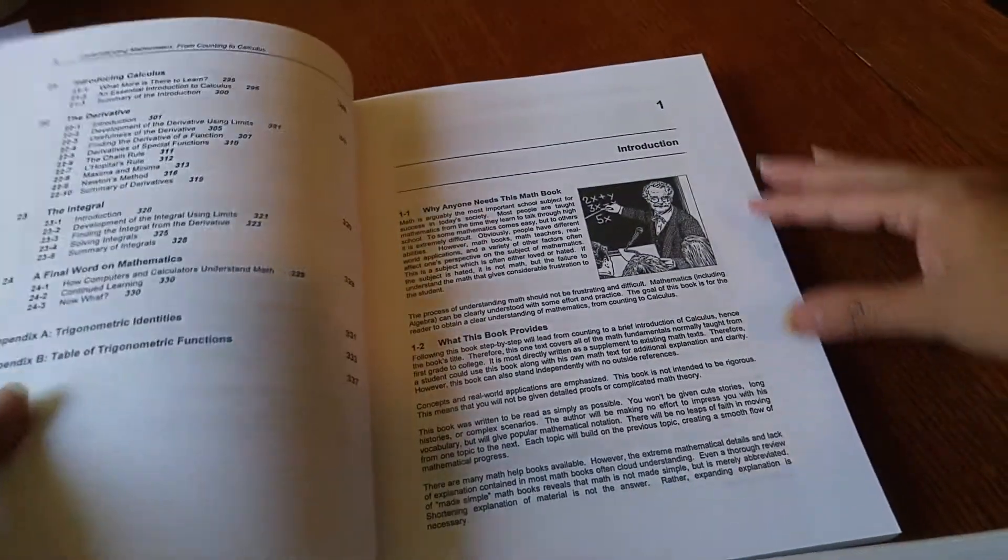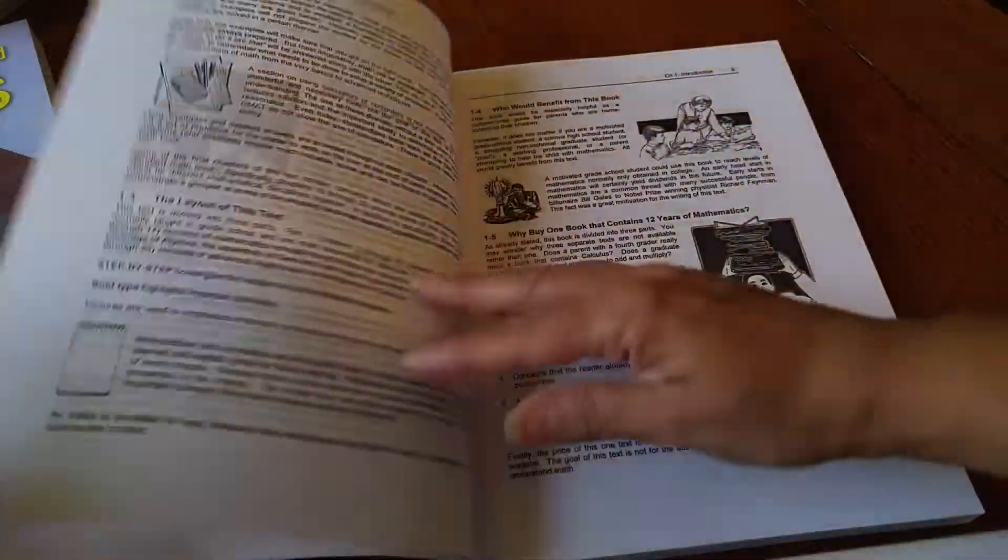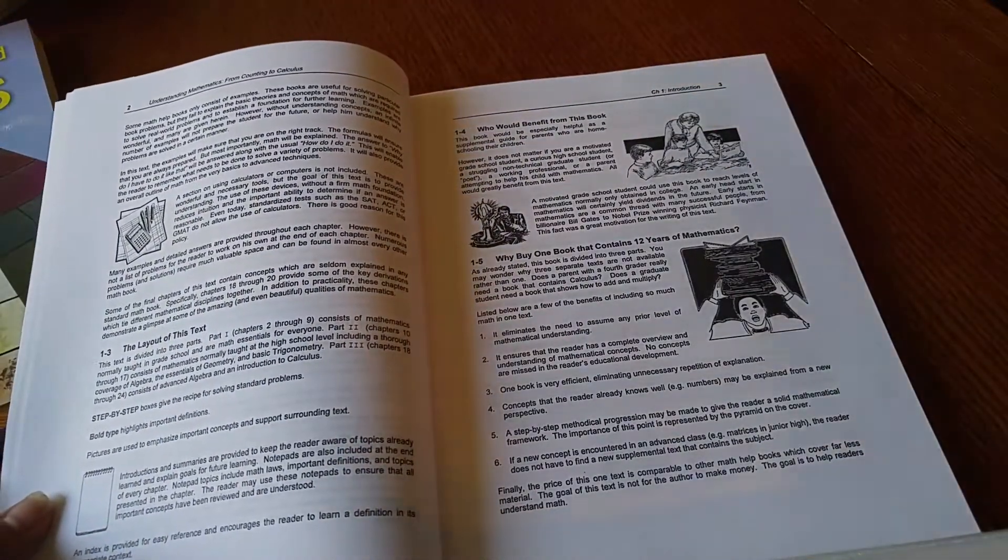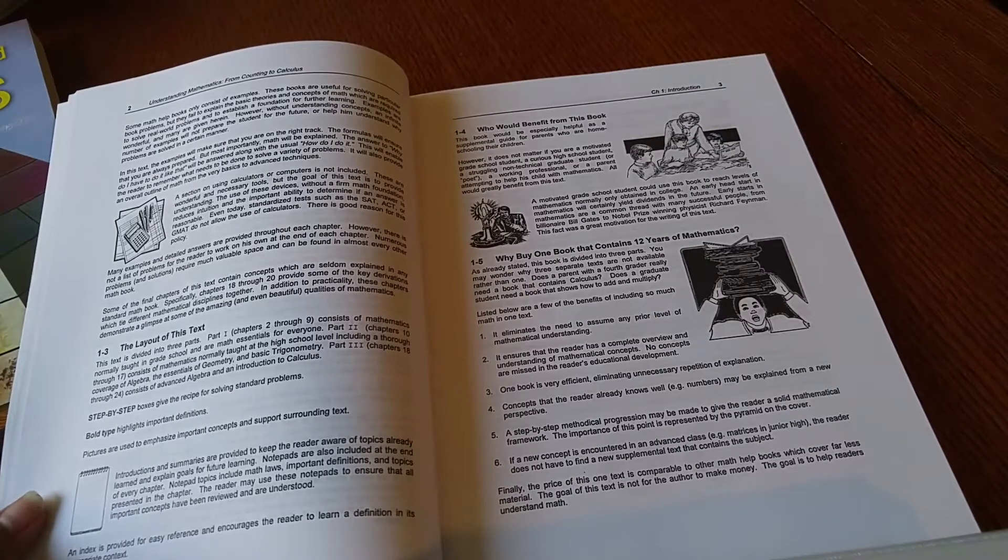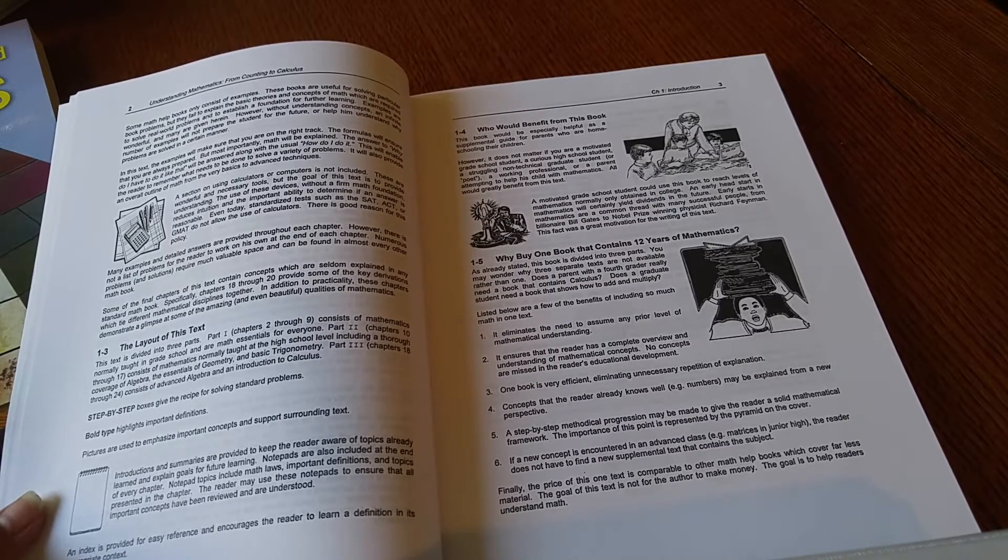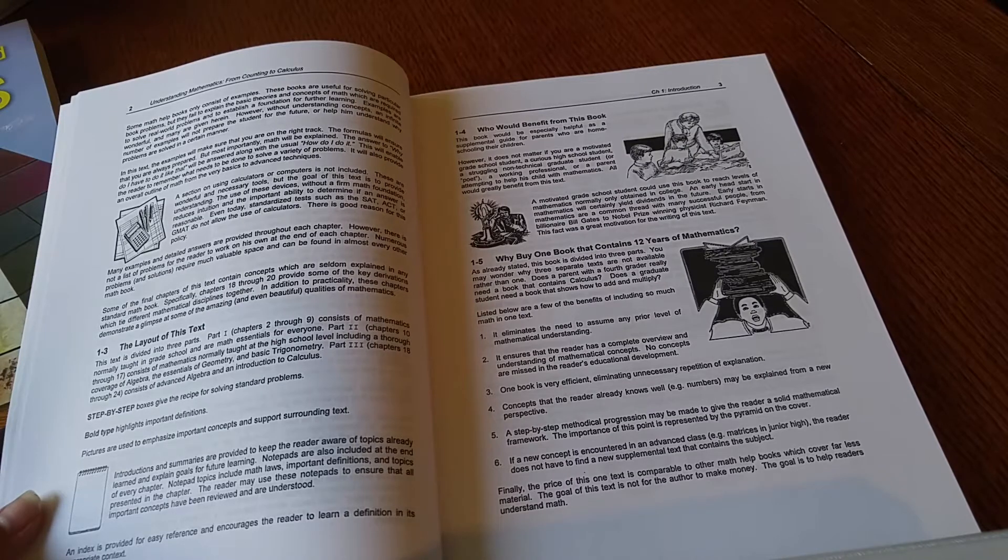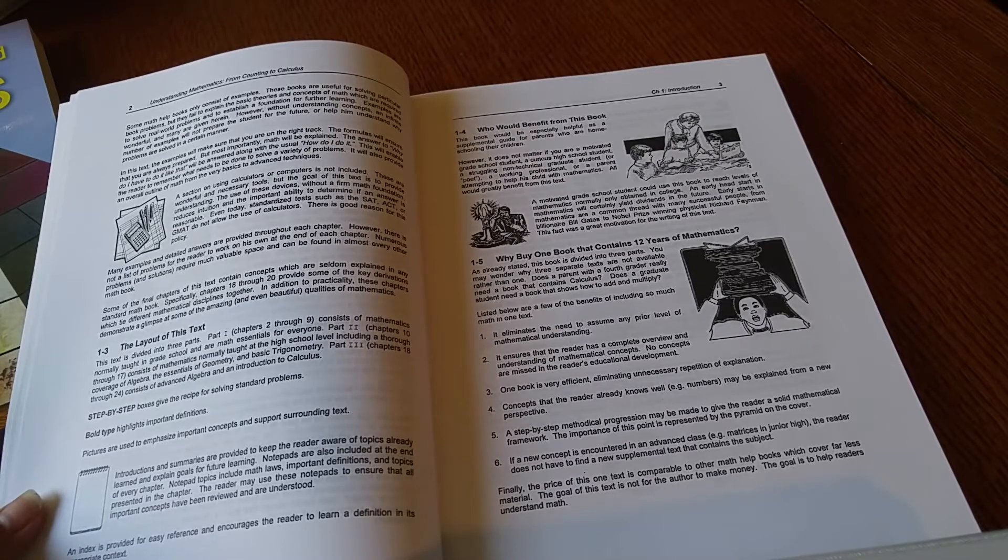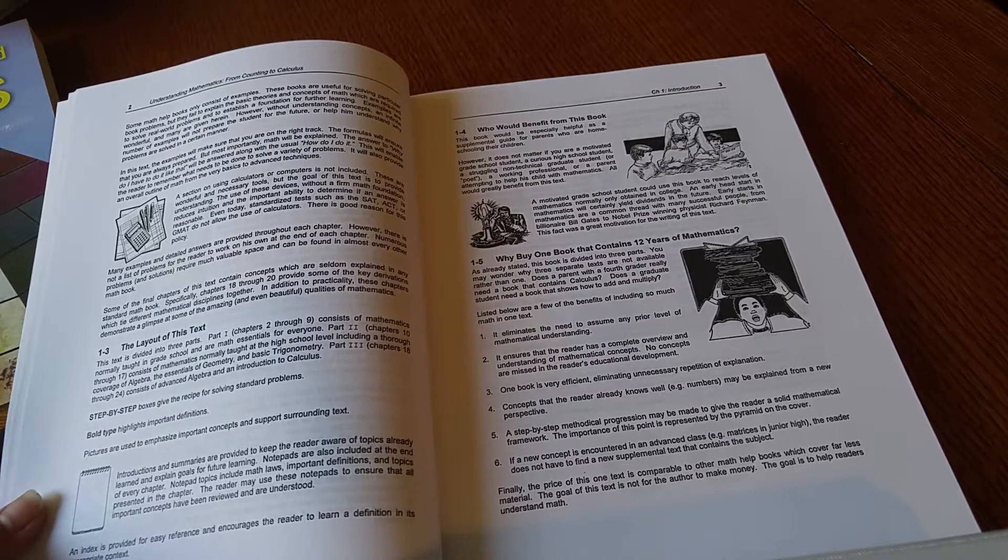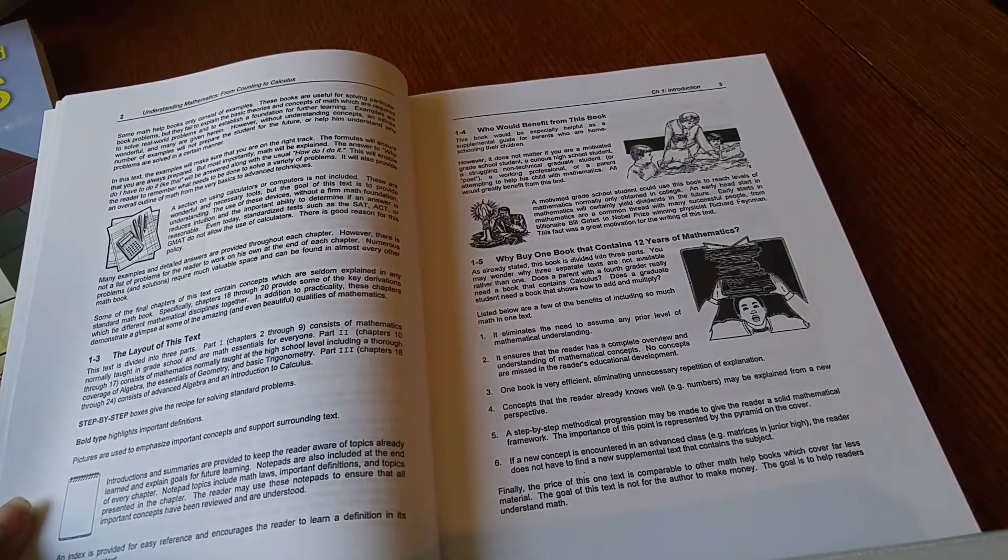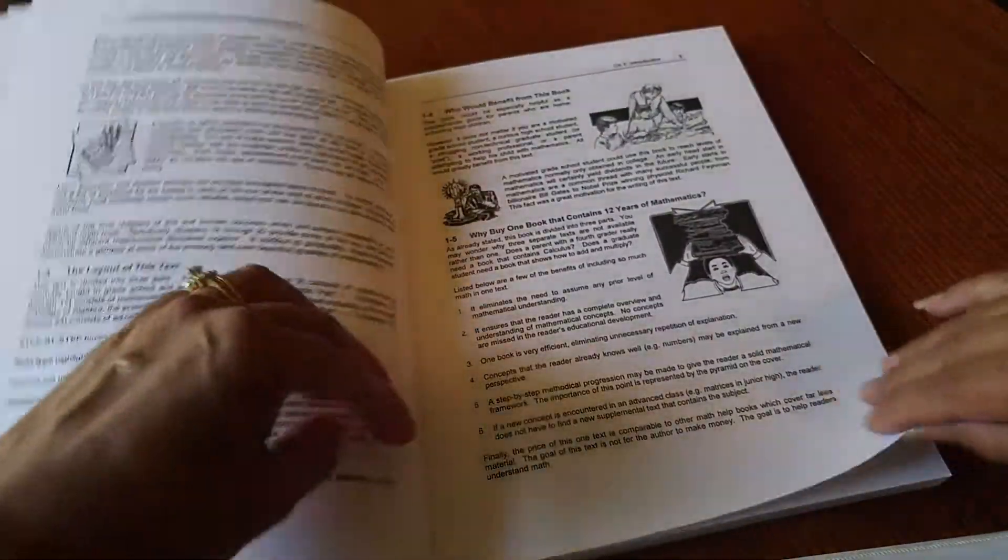Here it says 'Why anyone needs this math book,' 'What this book provides,' and 'This is the layout of the text.' Here it says who would benefit from this book. 'This book would be especially helpful as a supplemental guide for parents who are homeschooling their children. However, it does not matter if you are a motivated grade school student, a curious high school student, a struggling non-technical graduate student, a working professional, or a parent attempting to help his child with mathematics - all would greatly benefit from this text.' And then, 'Why buy one book that contains 12 years of mathematics.' So I think this is just really great.